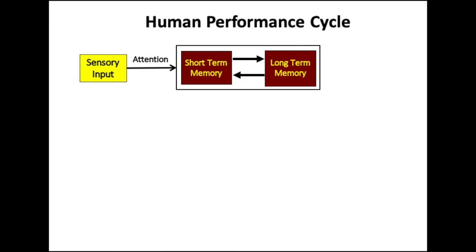We know that human beings are reactionary beings — they perform in response to some stimulus. This stimulus can be sensed through any of the sensory mechanisms, such as eyes, ears, nose, etc. This acquired stimulus becomes information, which is carried through the human information processing system, commonly known as memory.